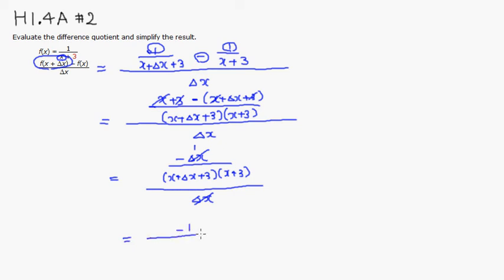And then we can't really do much, so we're going to have x plus delta x plus 3 times quantity x plus 3. So this is the answer. Alright, so hopefully this was clear.